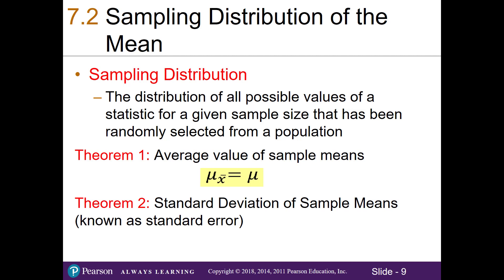Theorem 2 is known as the standard deviation of sample means, also known as our standard error. If I take all my possible samples and I take their sample means, the standard deviation of these statistics is the population standard deviation divided by the square root of n.